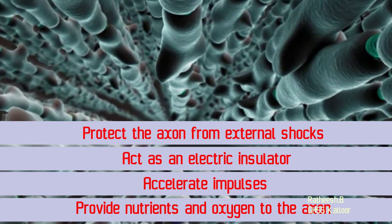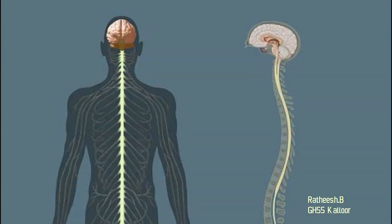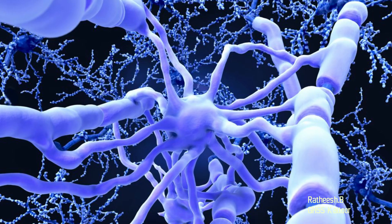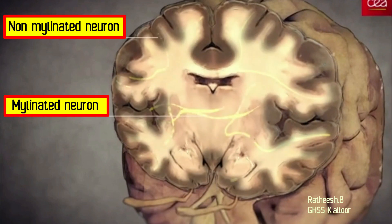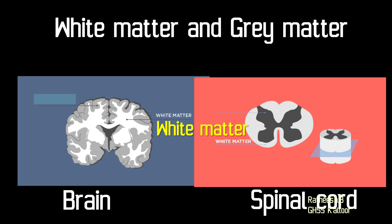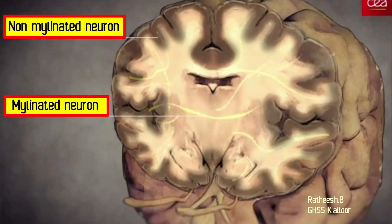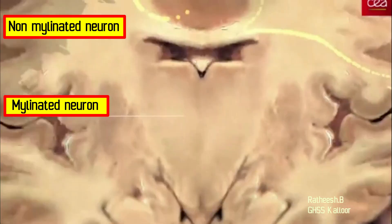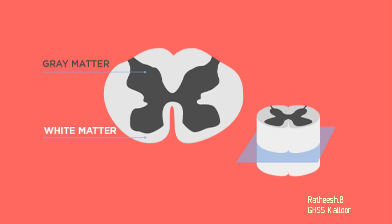What color does the part of the brain and spinal cord appear where myelinated nerve cells are present in abundance? That part is white in color, and it is called white matter. The part of the brain and spinal cord where non-myelinated nerve cells — that is, nerve cells without myelin sheath — are present is gray in color, and that part is called gray matter.